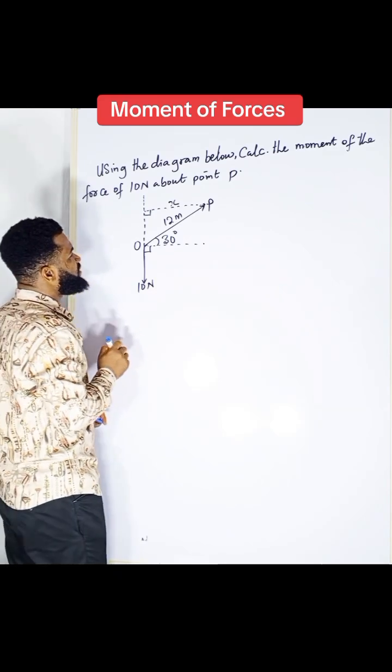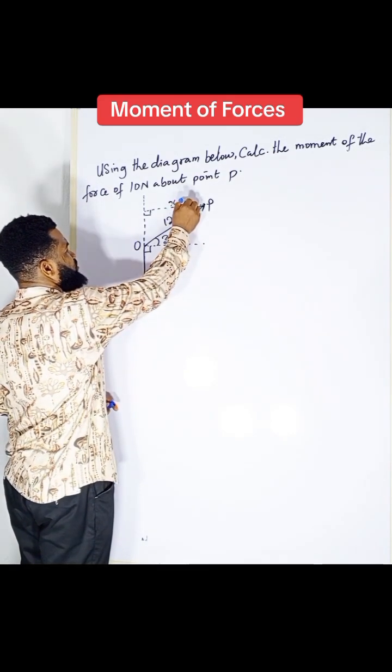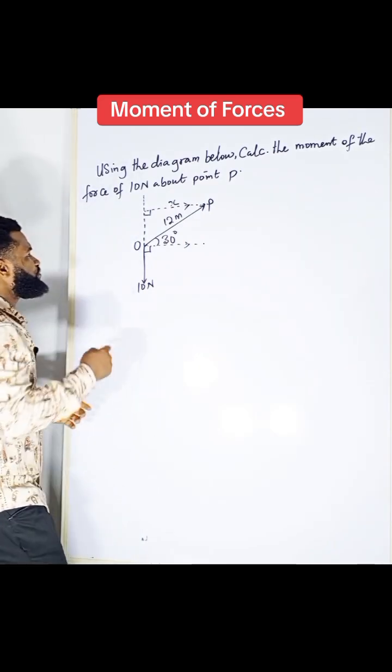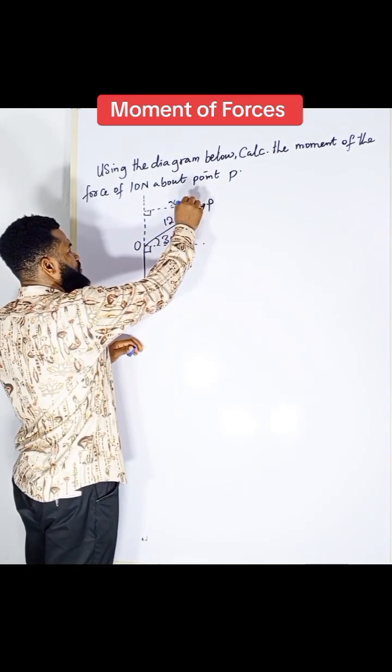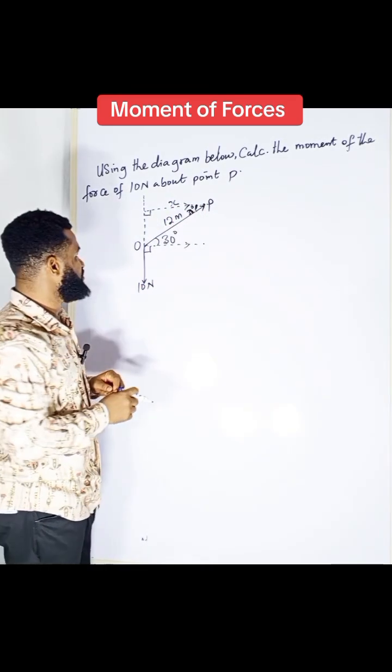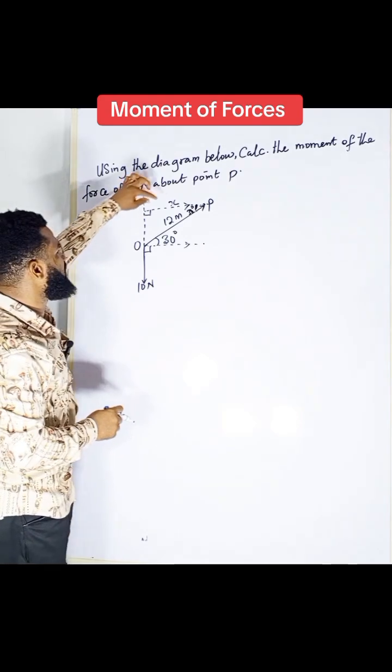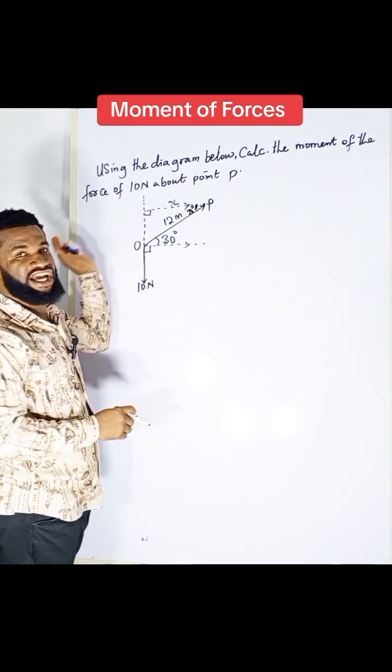Now, if you check this diagram very well, you realize that this must be parallel to this point. So, on that note, this value here becomes 30 degrees according to alternate angle. So, I'm going to find the value of x, then multiply it by 10, then I have my moment.